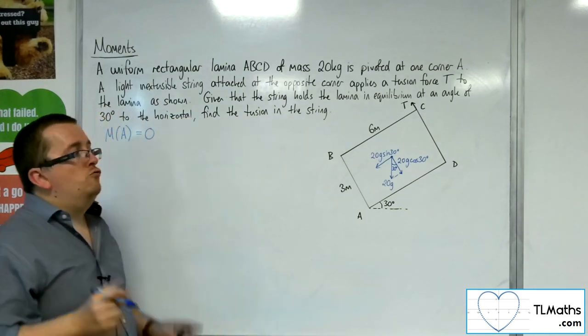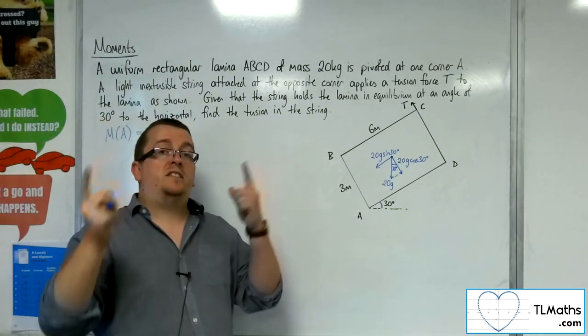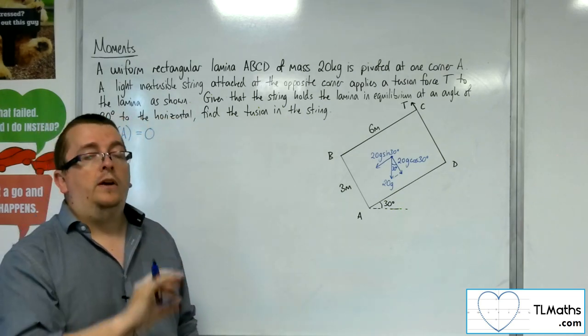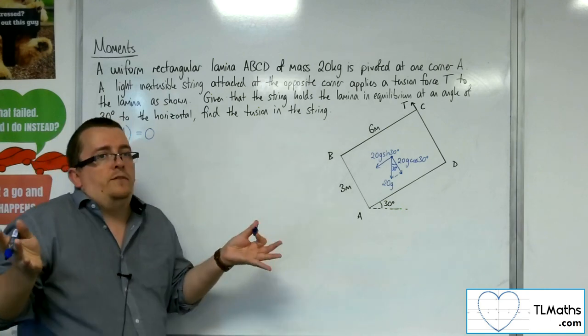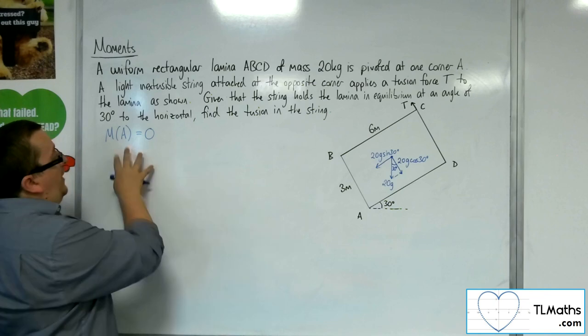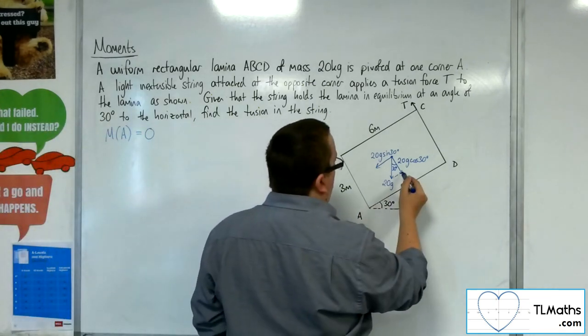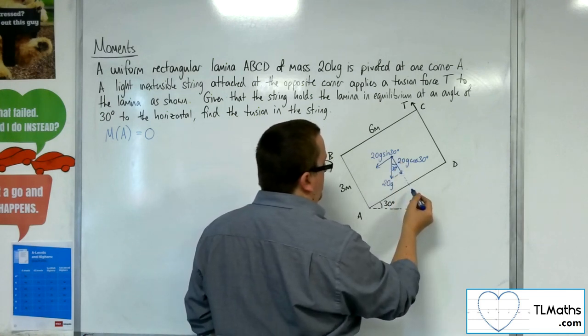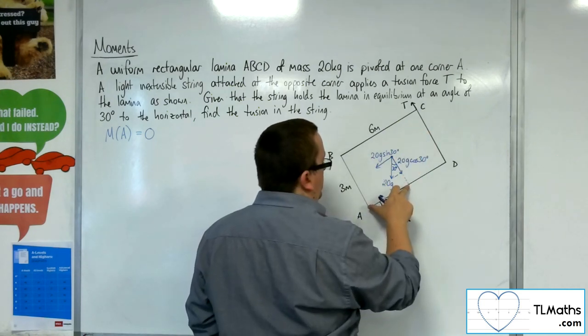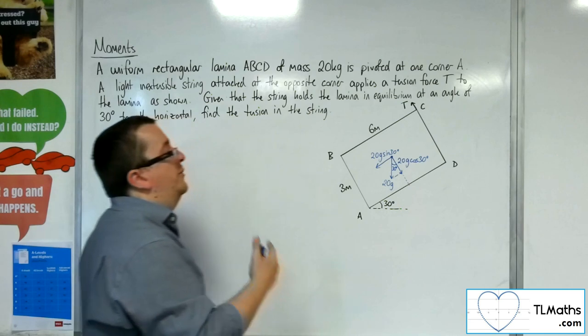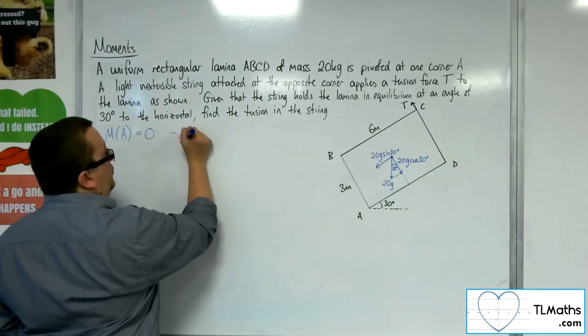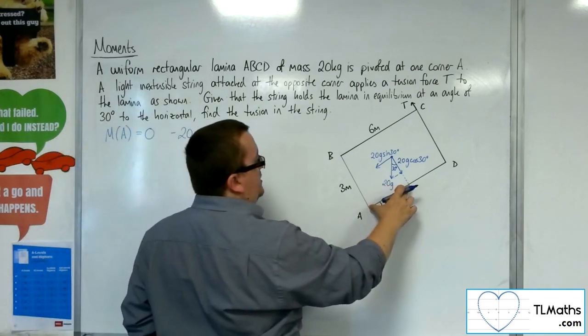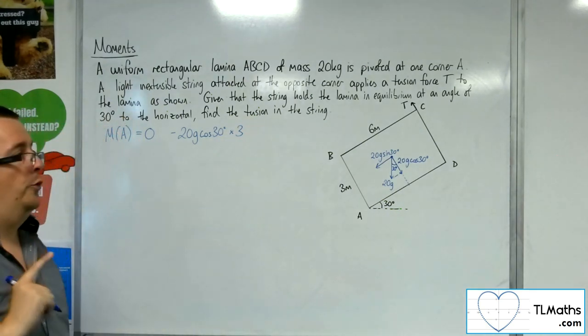So rather than thinking of the weight as a single force, I'm going to think of it like two separate forces, a horizontal and vertical component. So when I'm taking moments about A, what I'm thinking about is, if I look at this force here and I'm projected down, well, if that's 6 metres, then that's 3 metres. It's going around in that direction, it's going clockwise, so it's negative. So we've got minus 20G cosine 30 times by that distance of 3 metres. That's the first force to consider.